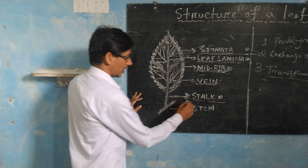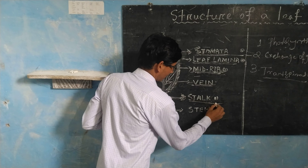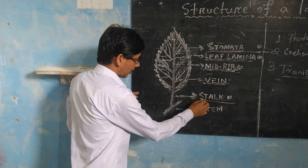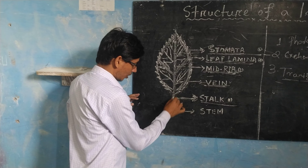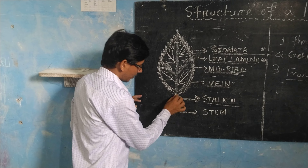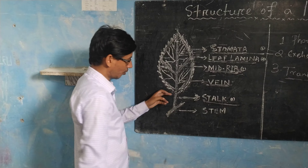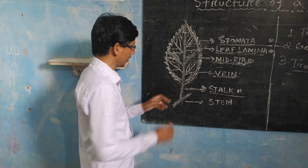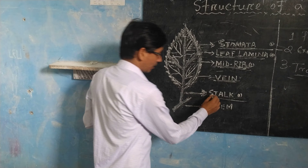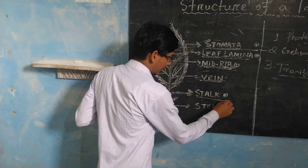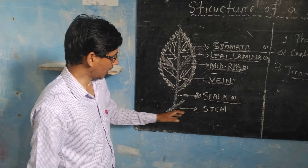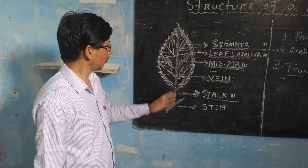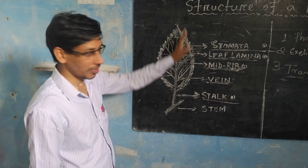First, the leaf stalk. What is the leaf stalk? The leaf stalk is connected to the leaf stem, and it holds together the leaf stem and the leaf. The function of the leaf stalk is that it carries water and minerals to different parts of the leaf.